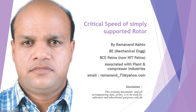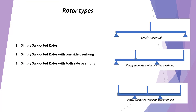Today's topic is finding the critical speed. There are three types of rotor: simply supported rotor, simply supported rotor with one side overhung, and simply supported rotor with both sides overhung. Using the general methods of calculating critical speed, we can find multiple critical speeds.